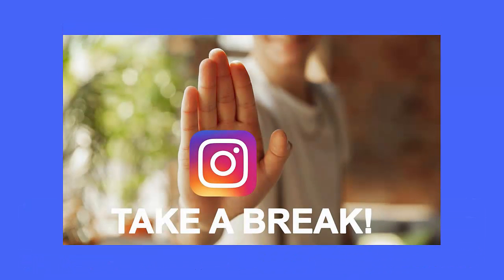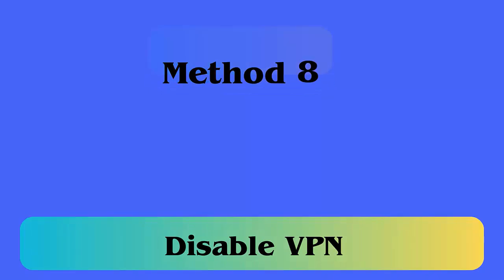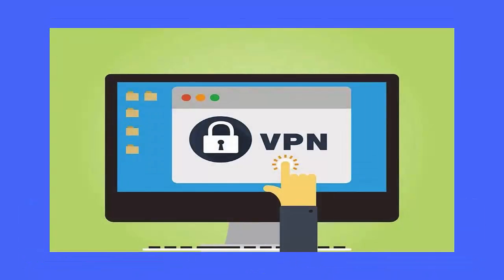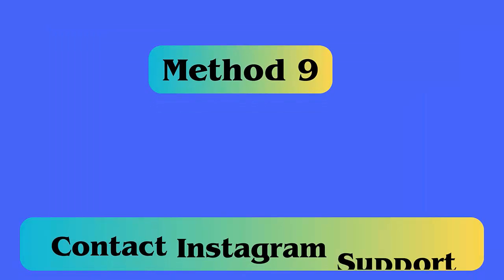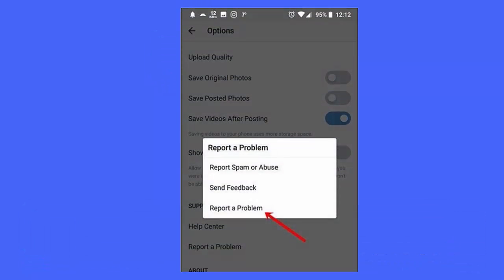Method 7: Take a pause from Instagram. When the same error is irritating you and you're still wondering why Instagram restricted your account, take a break. The best approach is to log out from your Instagram account and wait for one or two days. Method 8: Disable VPN. If you are using a VPN service, such errors can occur, so you should disable the service temporarily to check if the warning message gets resolved.